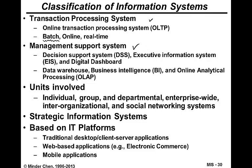Systems that support the management level used to be called decision support systems or executive information systems for top executives, or just display performance measures as a digital dashboard. In terms of online analytical processing, there are different technologies and terminologies, like data warehouse and business intelligence systems. A new phenomenon is systems used for people to network at a social level. Sometimes certain systems can be used for a strategic purpose — we call it a strategic information system.